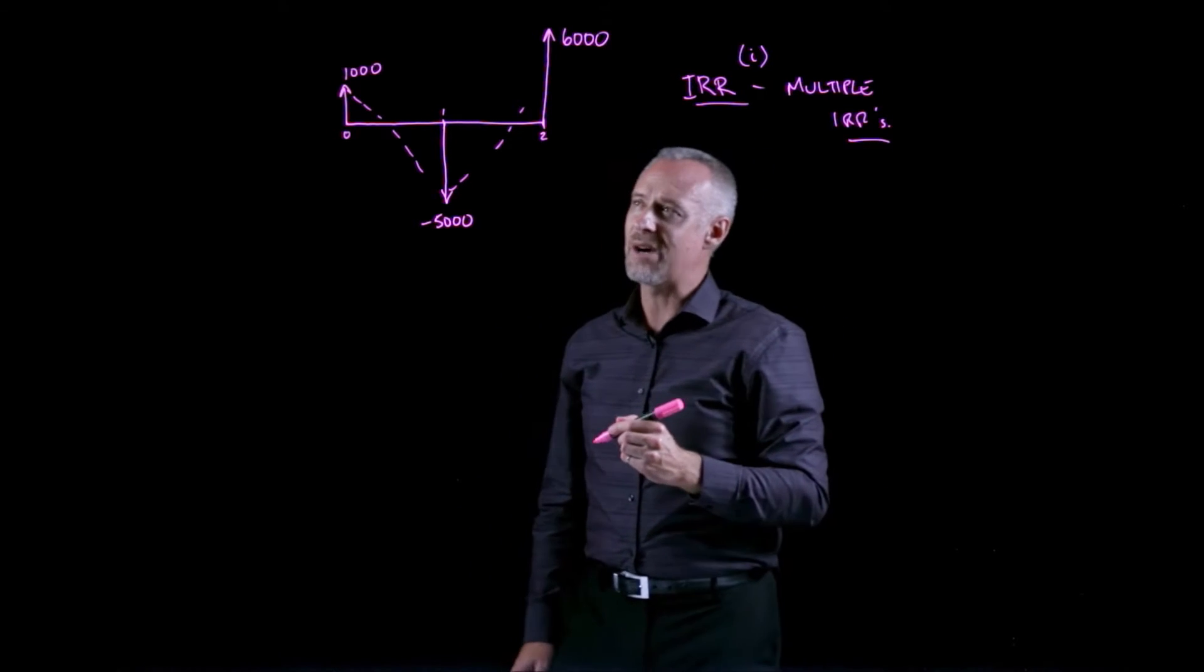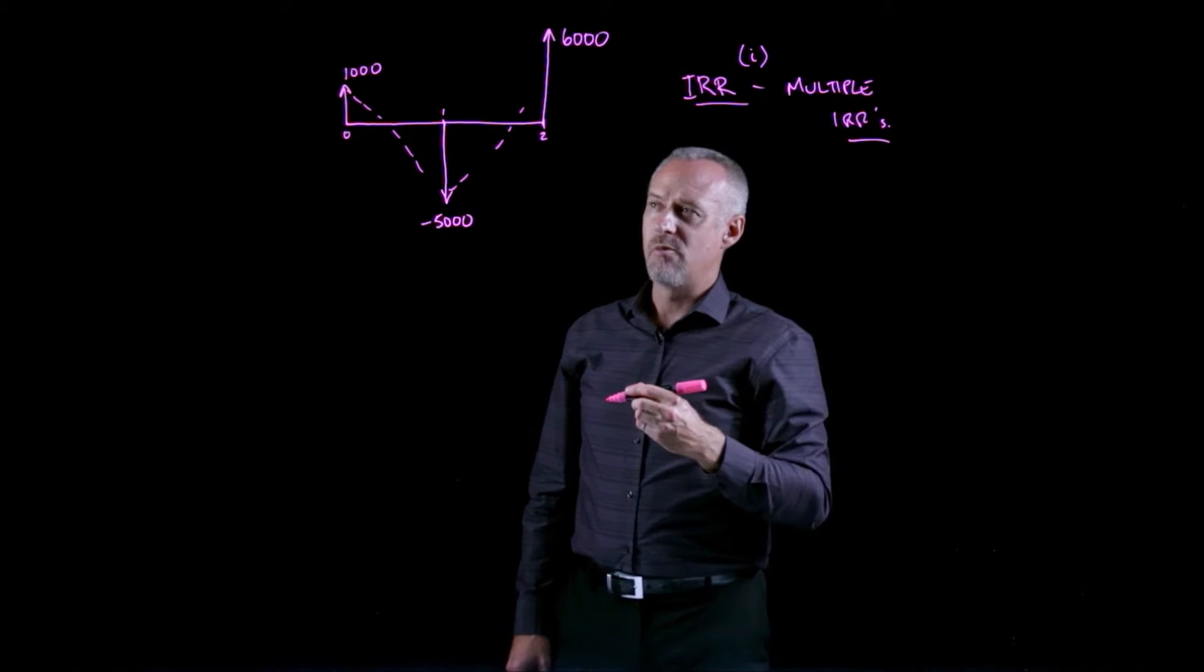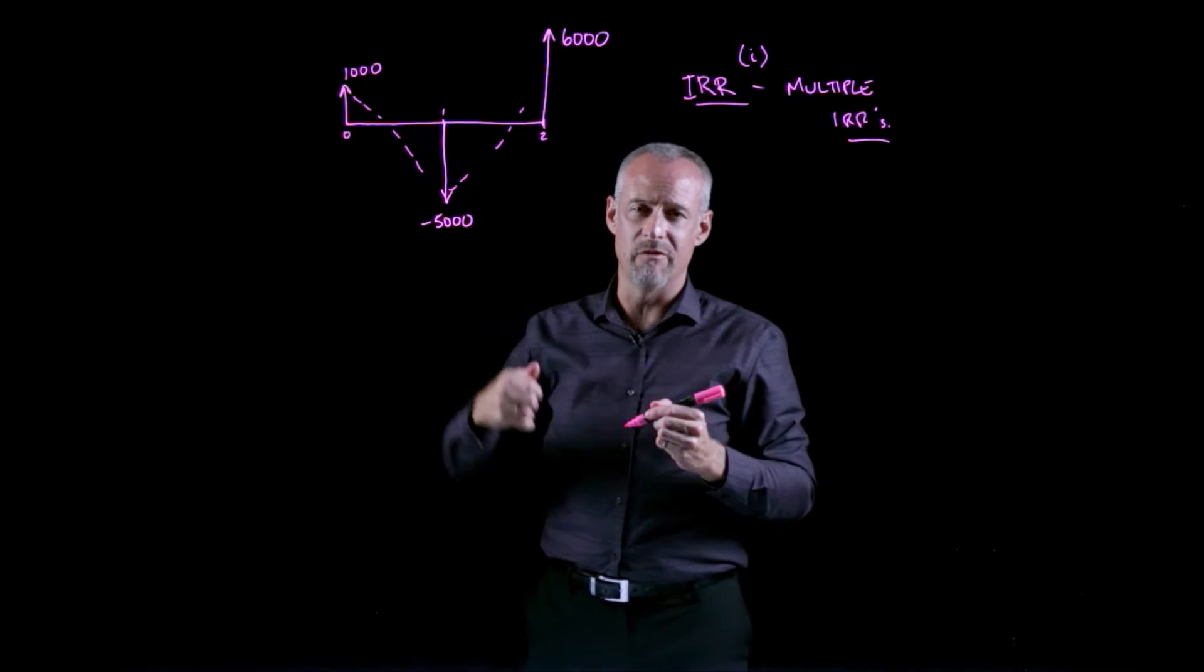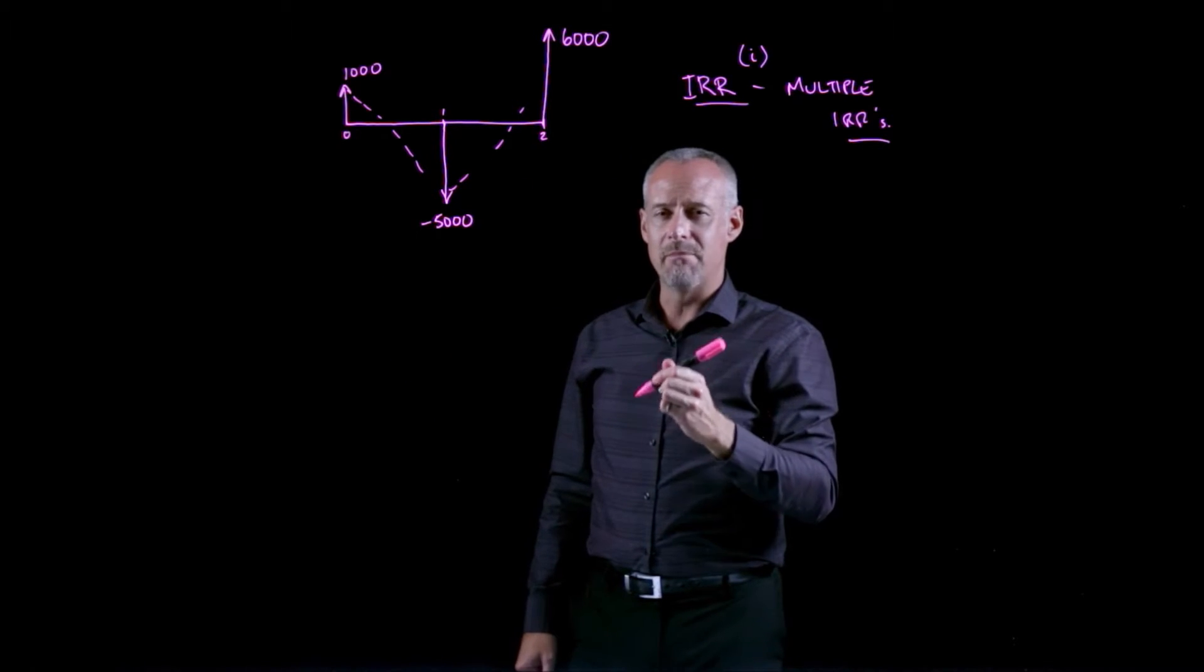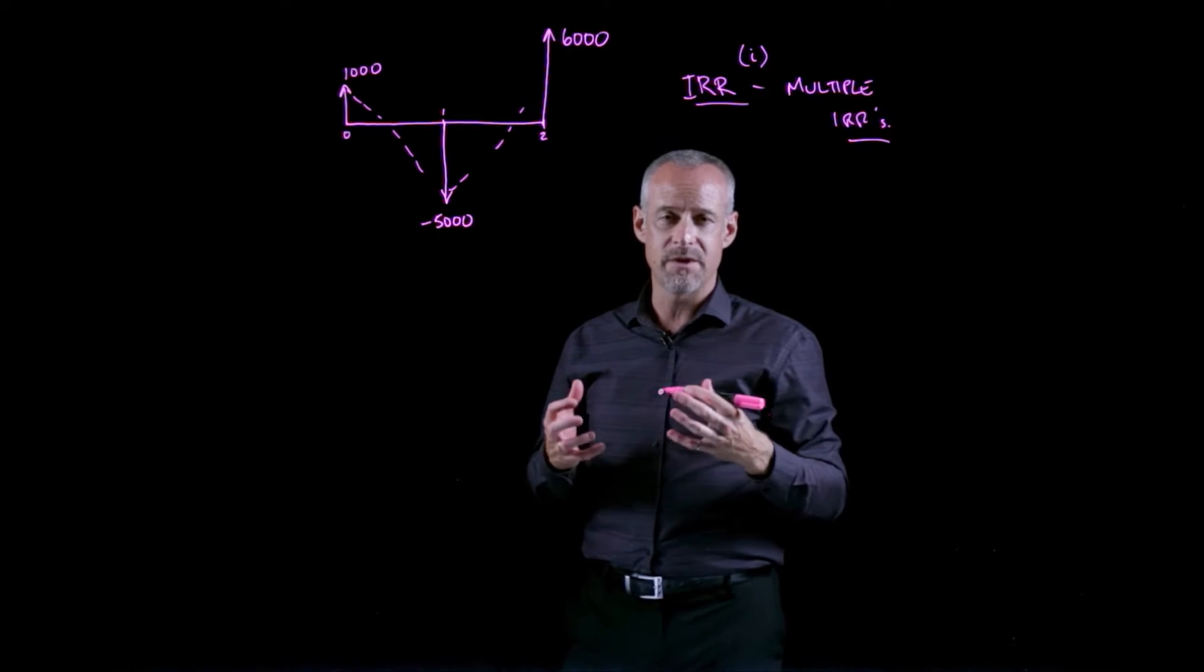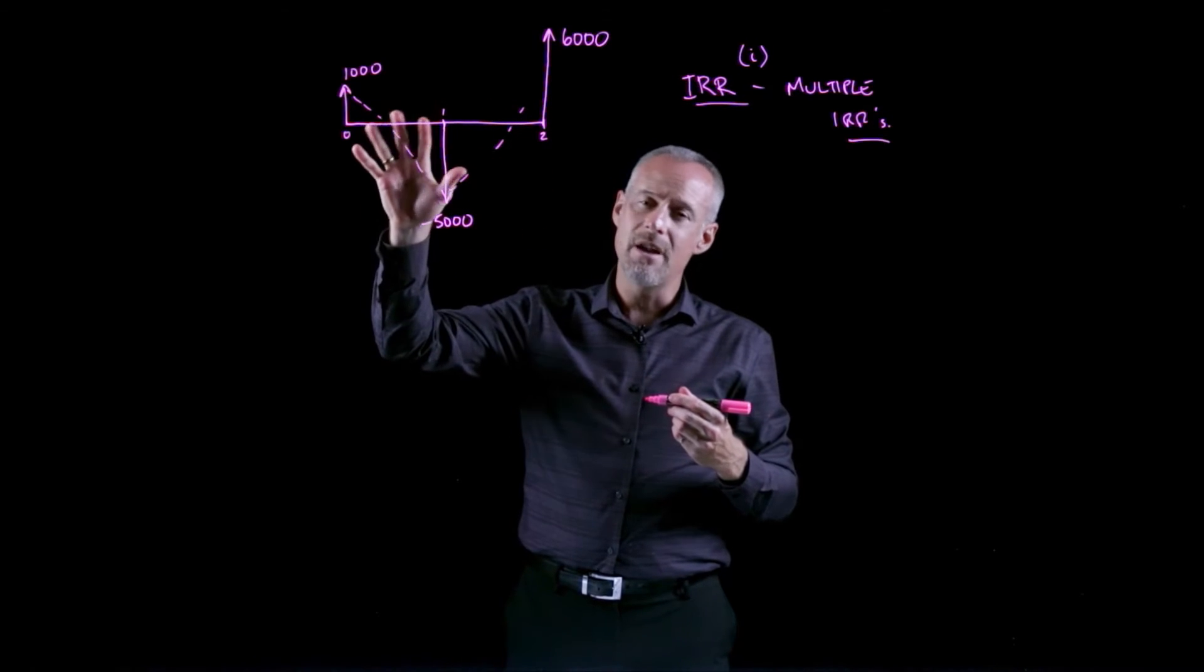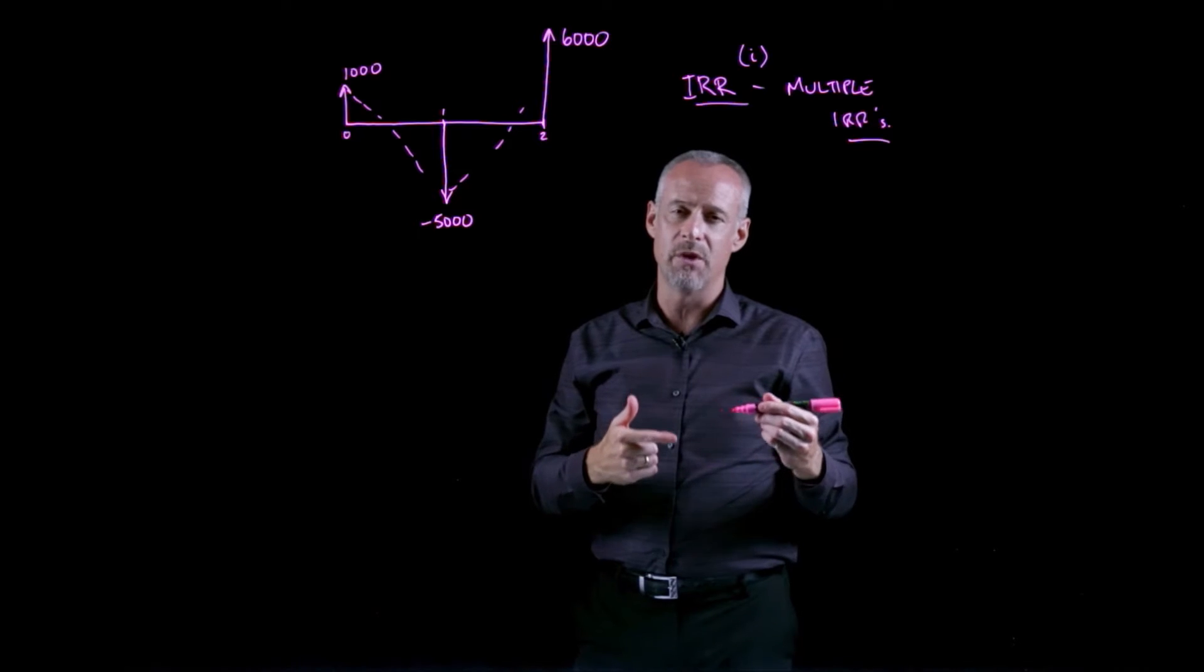What happens to the money that comes from this project? When we start this project, the project gives us money at the beginning. Maybe this is some type of signing bonus, but the project immediately generates money. We can assume that money doesn't stay in the project, but goes into the general fund of the company and is available for investments in other projects. It's a reasonable assumption that positive cash flows from a project get reinvested in other projects at a rate of return at least equal to the company's minimum attractive rate of return.